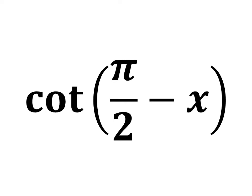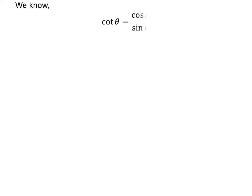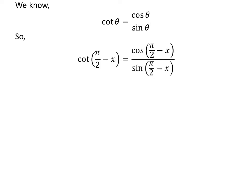In this video, we will learn to find the value of cotangent of half of pi minus x. We know cotangent of theta is equal to cosine of theta upon sine of theta. So, applying the above trigonometry identity, cotangent of half of pi minus x is equal to cosine of half of pi minus x upon sine of half of pi minus x.